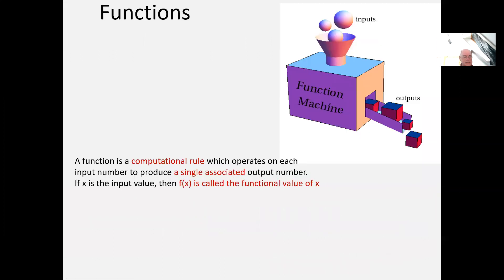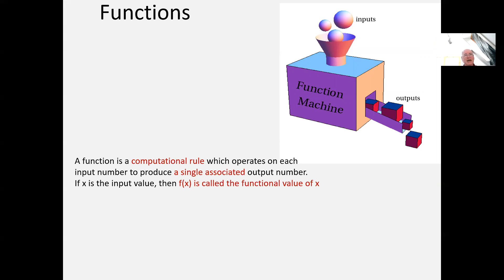In the last few minutes, let me introduce the objects of calculus — and that is functions. What is a function? A function is a computational rule which operates on each input number to produce a single associated output number. If x is the input number, then F of x is the output number, called the function value. With this expression F of x, we've moved away from symbolic algebra — F does not mean F times x. F is not a number.